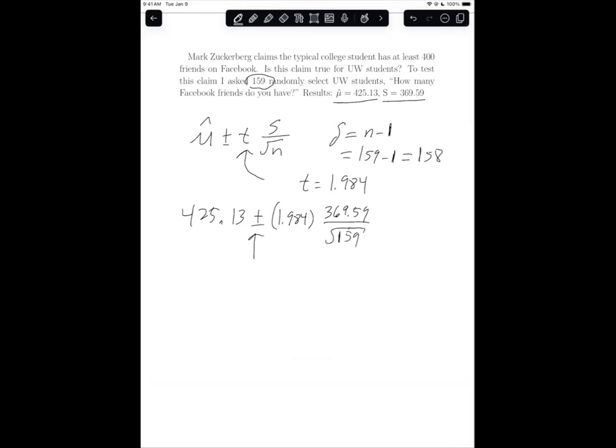And so this plus or minus means we're going to take that number minus this product on the other side, and then we're going to take that number and do plus that same thing. And that's how we get two numbers for the interval.